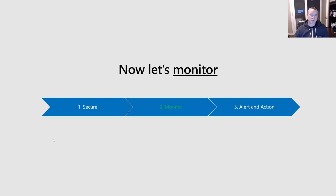In part one, we talked about how to secure your environment and tenant. Here, what we're going to do is talk about monitoring — how can you monitor your environments and your tenant to ensure you understand what your users are doing and identify any behaviors that conflict with your organization's policies, so that you can go ahead and remediate those situations.